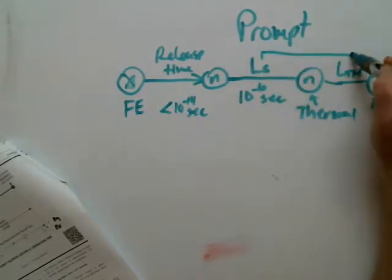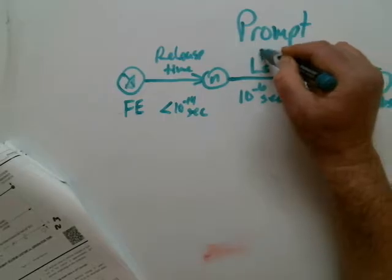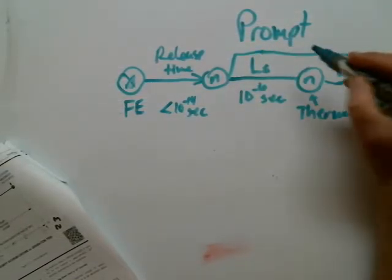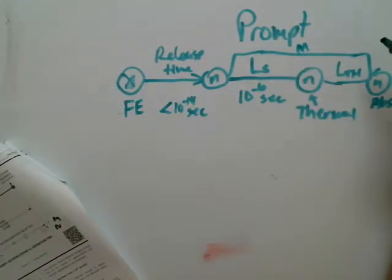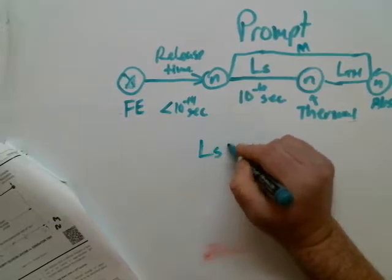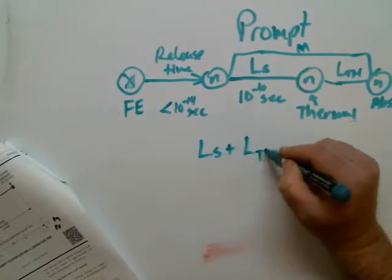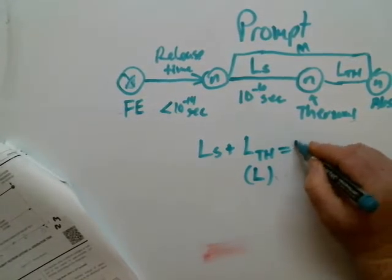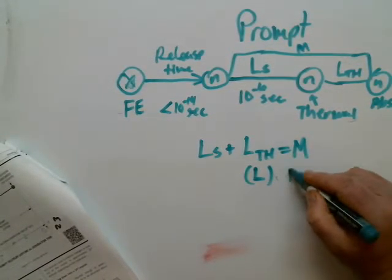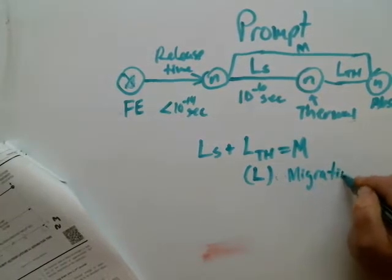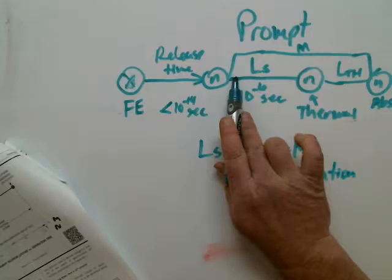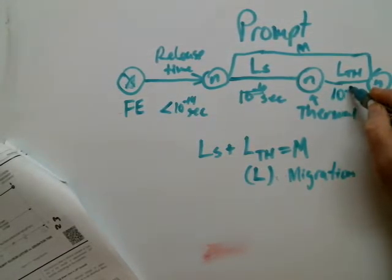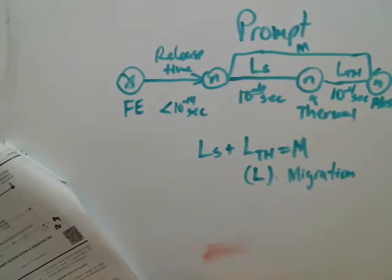The sum of these two, thermal diffusion length, which actually is from here to here, the sum of these two lengths is called the migration length, M. So slowing down length plus the thermal diffusion length, and sometimes you'll just see thermal diffusion length with an L like that, with no subscript, is equal to M, which is migration length. And you could also say that the sum of the slowing down time and the thermal diffusion time, which is 10 to the minus 4th seconds, is the migration time.